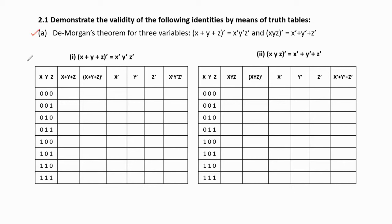The first part of the question is De Morgan's theorem for three variables. There are two types of theorems in De Morgan's. The first theorem says that (x + y + z)̄ = x̄ȳz̄. The second theorem says that (xyz)̄ = x̄ + ȳ + z̄. Here plus means OR operator, multiplication means AND operator indicated with the dot symbol, and bar means NOT gate or complement.